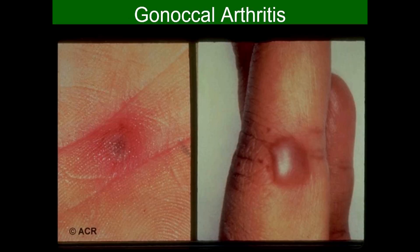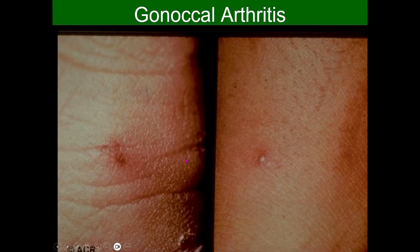With respect to presentation, patients will have a migratory polyarthralgia — different from non-gonococcal septic arthritis, which stays in one joint — generally occurring three to five days prior to diagnosis. Physical examination reveals arthritis in one or several joints, tenosynovitis (which can be purulent), a rash or dermatitis, and fever. Skin changes can include pustules and bullae, as shown here.